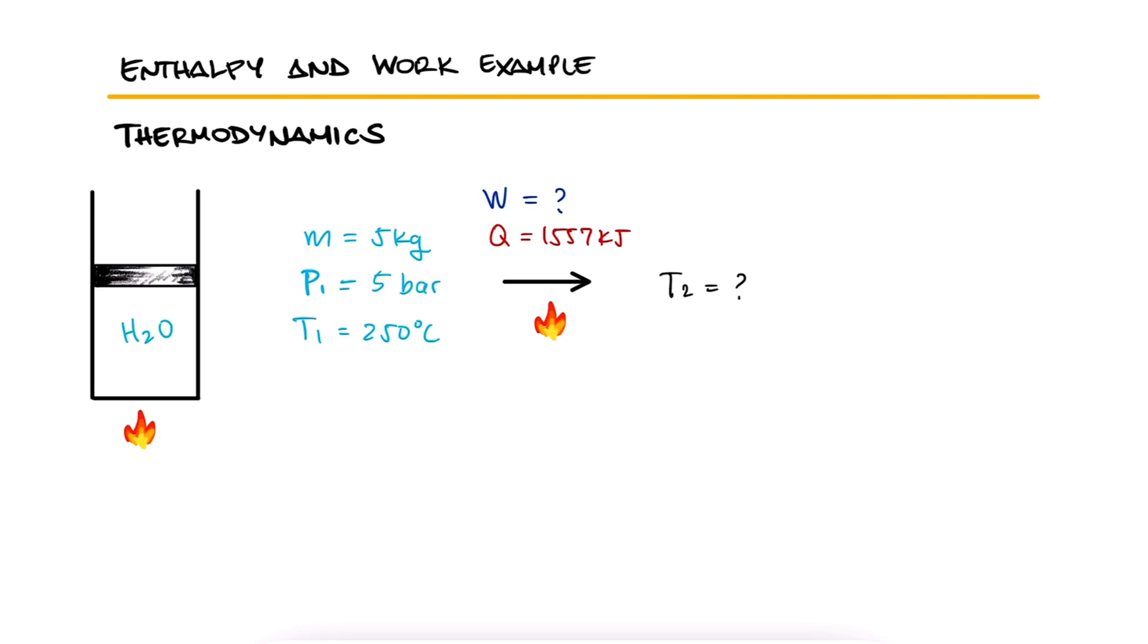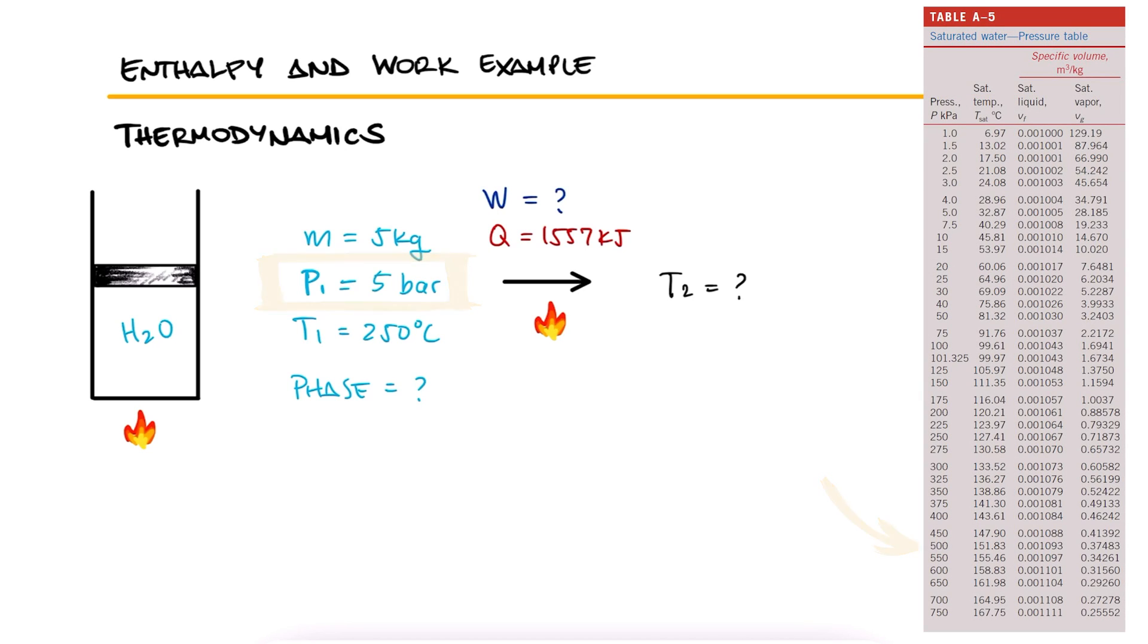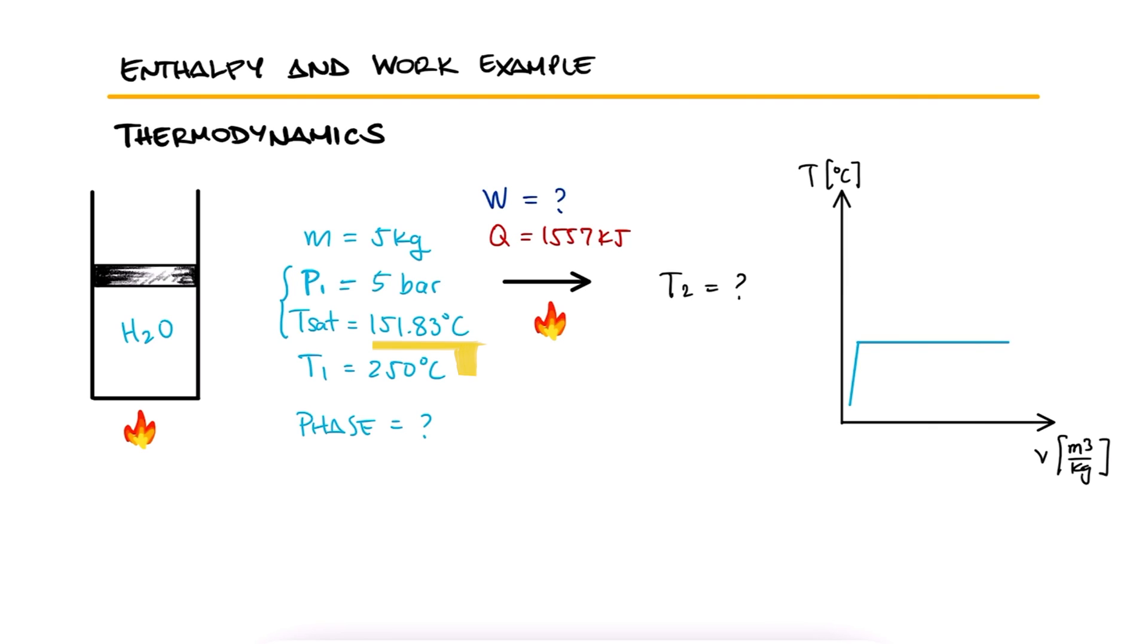As always, we first need to determine in which phase our substance is. At 5 bar, we see from the saturated tables that the saturation temperature is 151.83 Celsius. Since our water is at 250, we know the water is initially superheated. If we're adding heat, the final state will also be superheated.